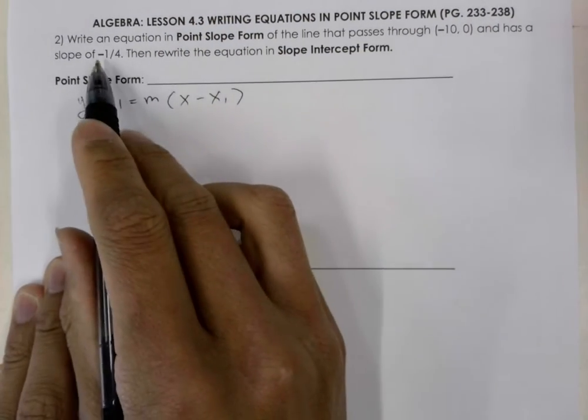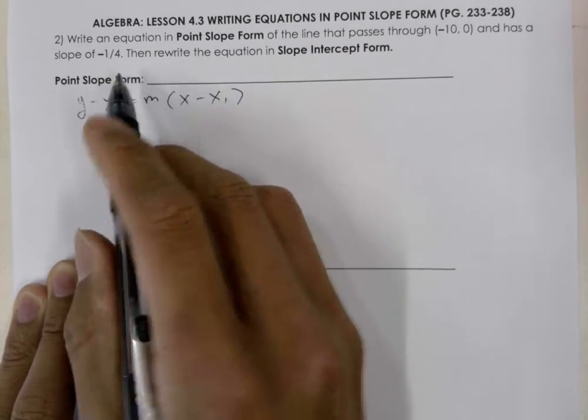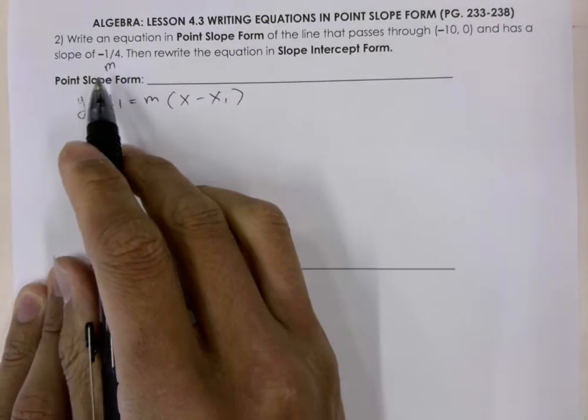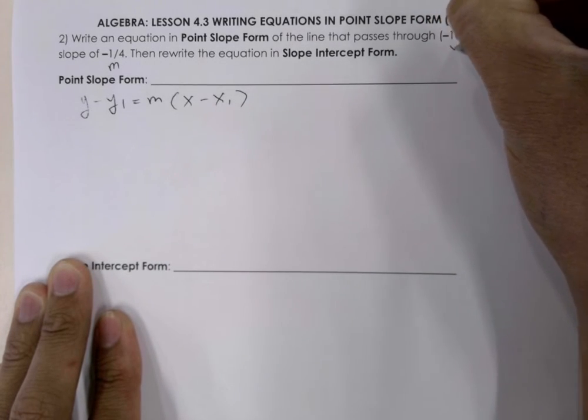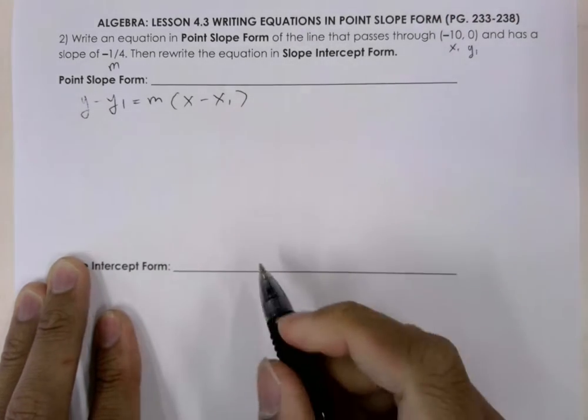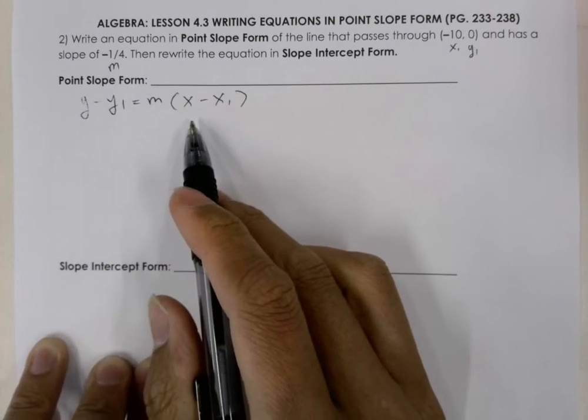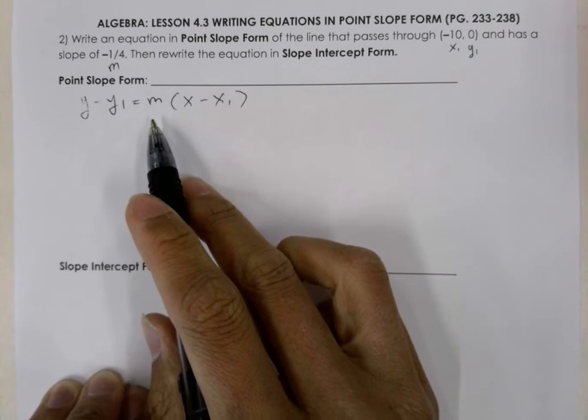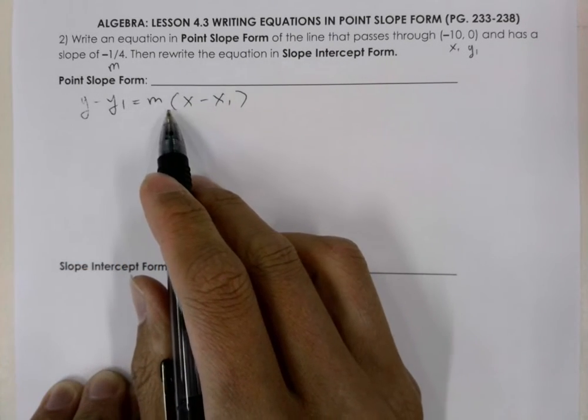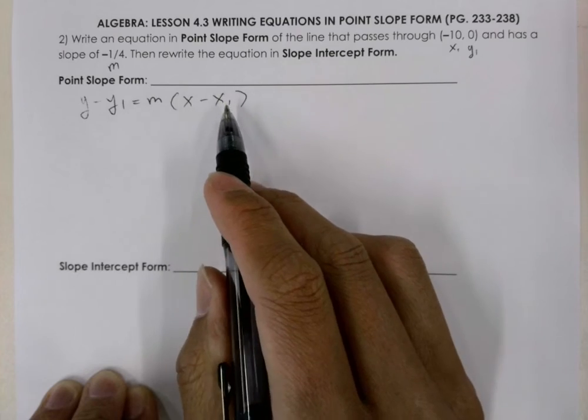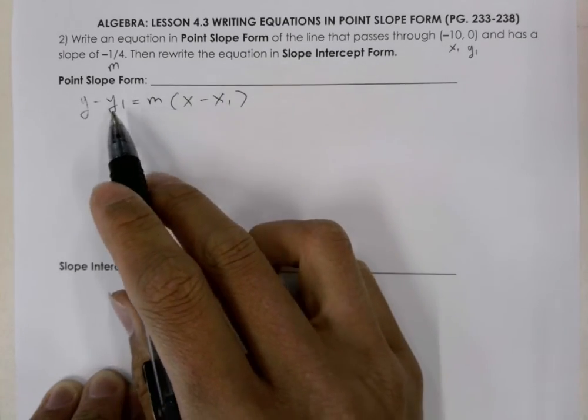So they give us the slope. The slope is negative 1 fourth and that's our m. They give us a point and that's going to be our x1, y1. So to rewrite the equation in point-slope form, we simply need to substitute these values in. m goes here, x1 goes here, and y1 goes here.